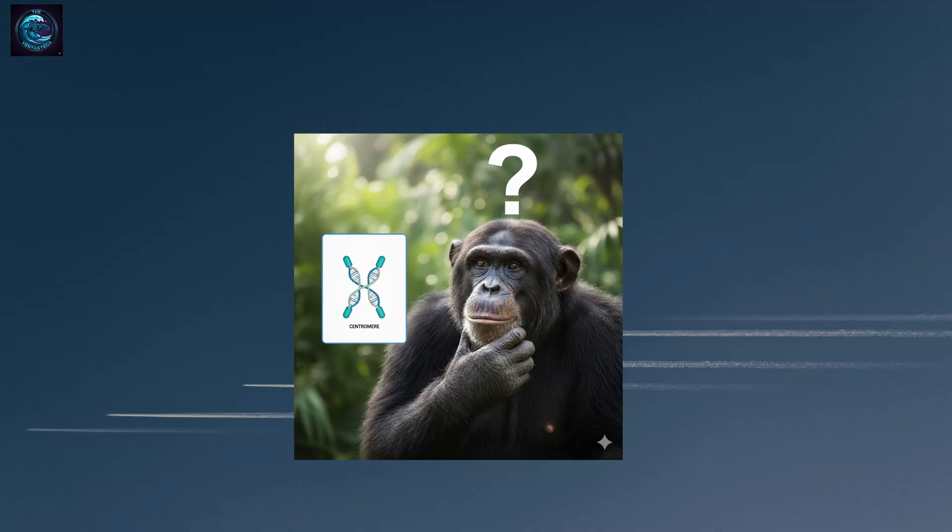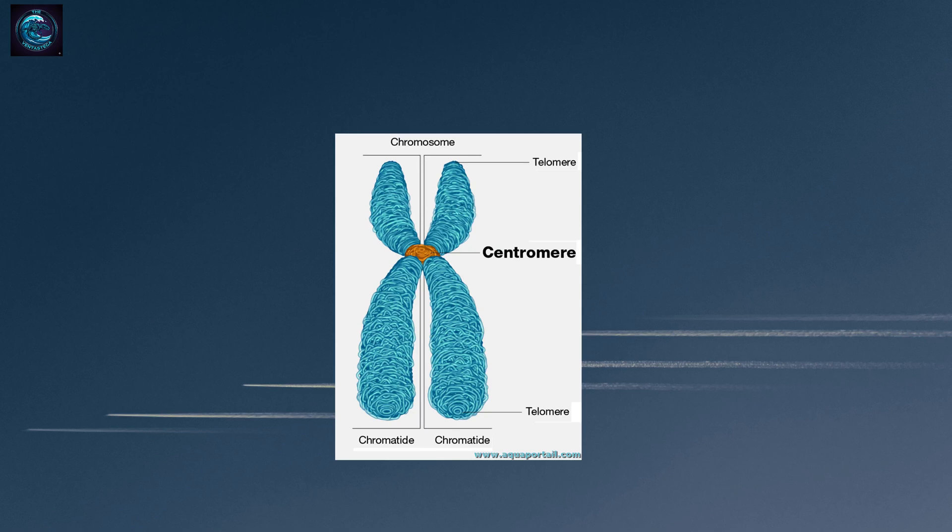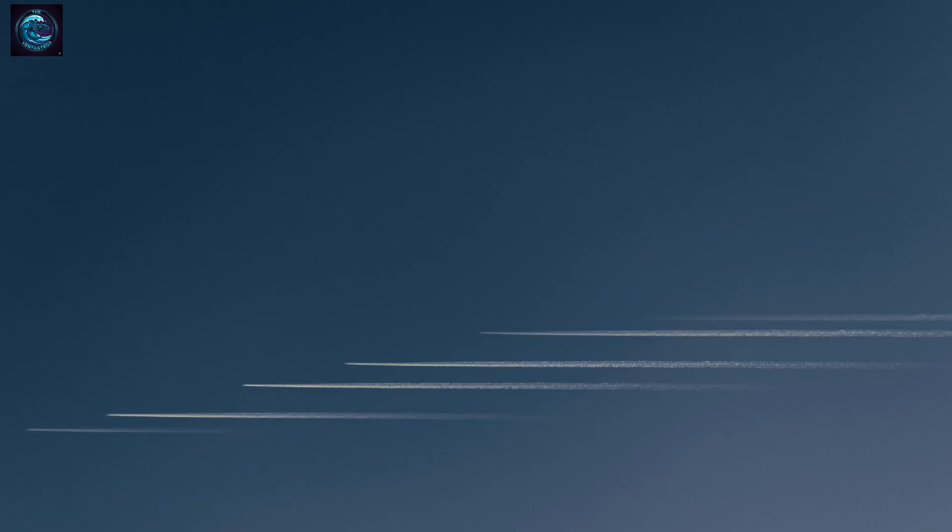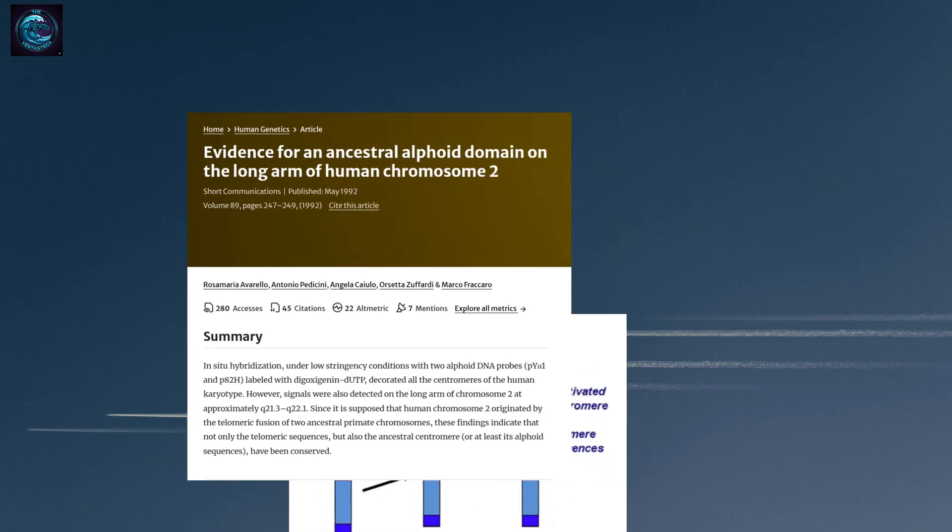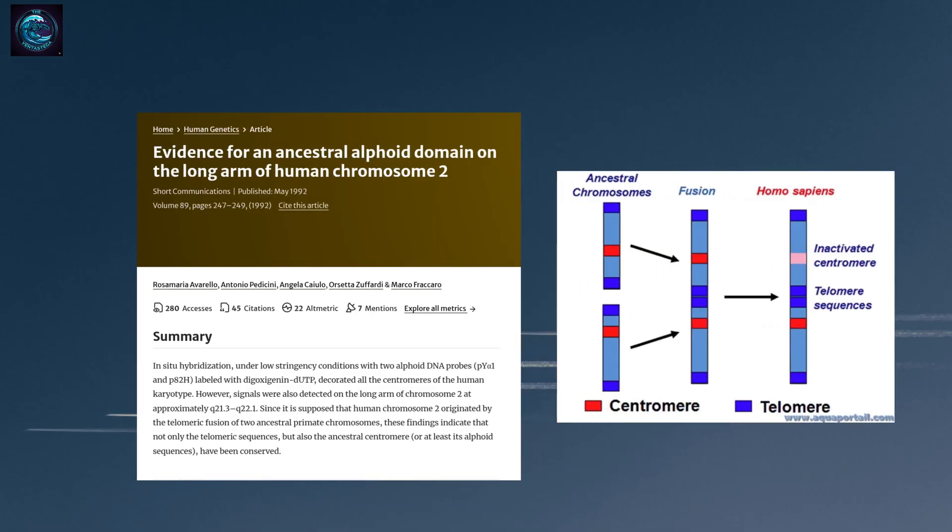But the telomere evidence is just the beginning. There's another smoking gun. The centromere. Every chromosome needs exactly one centromere, a specialized region that helps separate chromosomes during cell division. Too many or too few centromeres causes serious problems. When scientists looked at chromosome 2, they found something fascinating—evidence of two centromeres. One is active and functional, doing its job during cell division. But the other is vestigial, inactive, non-functional, just sitting there like a genetic fossil. This is exactly what we'd predict if two chromosomes fused. One centromere remained active while the other was deactivated over millions of years. It's like finding the remnants of a second engine in a car that was built by welding two motorcycles together.